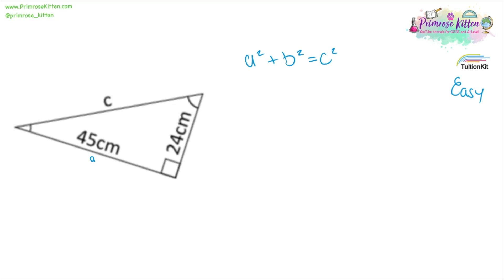C is already labeled for us. I'll call this one A and this one B. So A squared, 45 squared plus B squared, 24 squared equals C squared. 45 squared is 2025 plus 24 squared is 576 giving us in total 2601 as C squared. If we square root it to get the answer, that'll be 51.